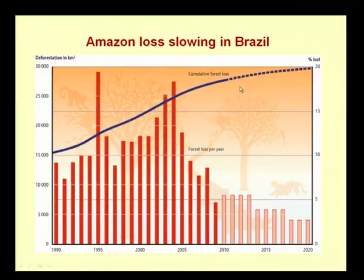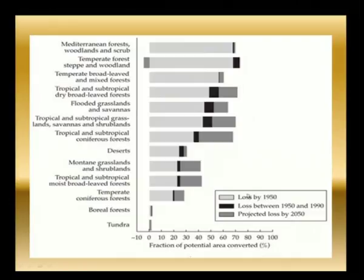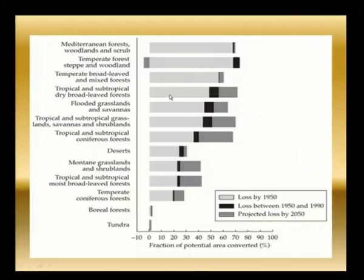Looking at cumulative forest loss, it is expected to stagnate, which is a positive sign. The diagram shows which types of forests have been most deforested: boreal, temperate, and coniferous. The light grey portion was lost by 1950, black represents loss between 1950 and 1990, and dark grey is projected loss by 2050. The damage that already happened before 1950 was very significant.